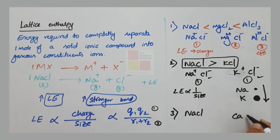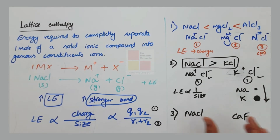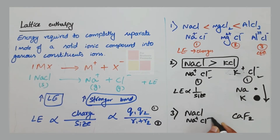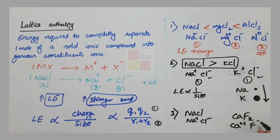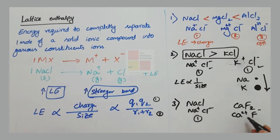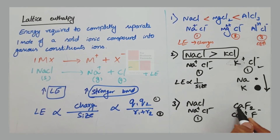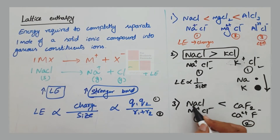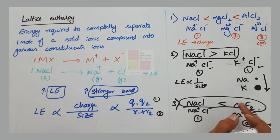Third example: comparing NaCl and CaF2. NaCl has Na⁺ and Cl⁻ (charges 1×1), while CaF2 has Ca²⁺ and F⁻ (charges 2×1 = 2). Since the charges are higher for CaF2, it has a stronger ionic bond than NaCl.